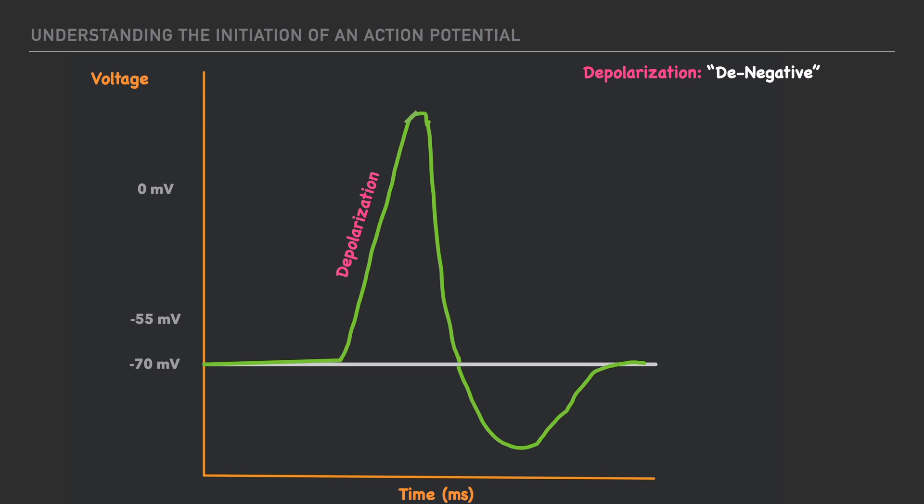And if we D-negate something, that really means we're making it more positive. And so what's happening in depolarization is that the inside of the cell is becoming more positive.